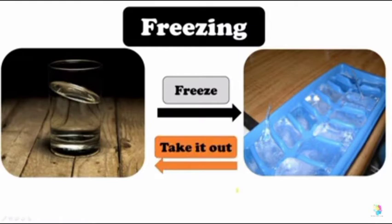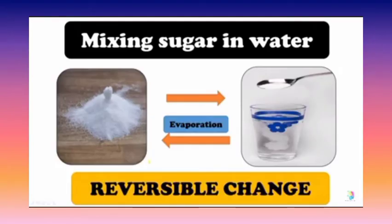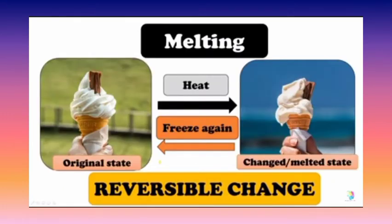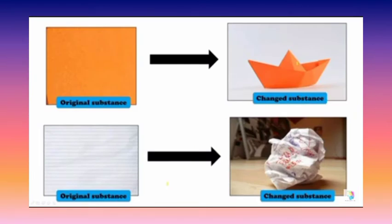While freezing, water becomes ice. When we apply heat on it, it will change into its original form. Mixing sugar in water is an example of a reversible change, because we get the original form of sugar when the process of evaporation takes place. When we provide heat, ice cream will melt, and if we freeze it again, it will go back to its original form. If we fold a paper in the form of a boat, we get the original form of the paper while unfolding it. So it is a reversible change.